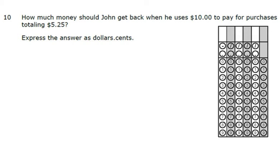You'll notice that this is a gridded response. How much money should John get back when he uses $10 to pay for purchases totaling $5.25? Express the answer as dollars cents. So it's a simple subtraction problem. But what they're trying to see if you can do is subtract two decimals where you have to do a lot of borrowing because we have a lot of zeros here. So $10 minus $5.25. Now you're going to notice I was very particular about lining up the decimal and lining up each of the numbers.